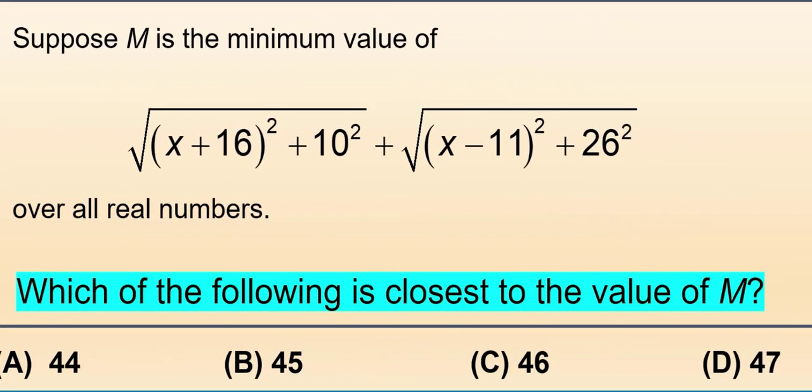Which of the following is closer to the value of M? The options are: A, 44; B, 45; C, 46; and D, 47. What do you think?